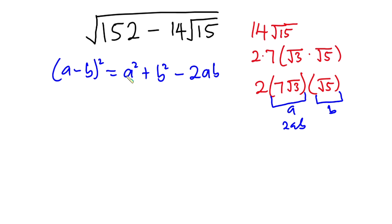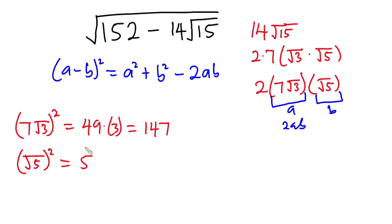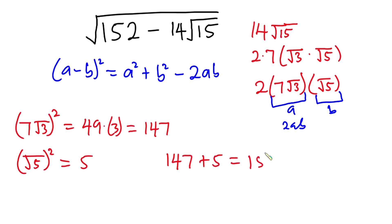From here, a is squared, so I'm going to square a. We have (7 square root of 3) all squared equals 147 — since 7 squared is 49, and the square cancels the root leaving 3, and 49 times 3 is 147. Then b is also squared: (square root of 5) squared equals 5. Now summing 147 plus 5 gives us 152.